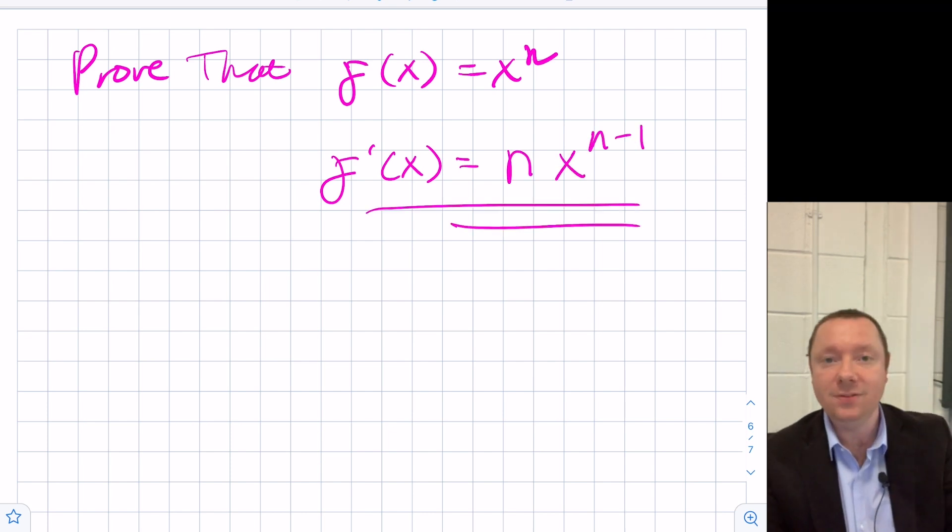This has been Coyle of Maths and today we have been looking at why when you differentiate x squared, you get an answer of 2x. Similarly with x cubed, you get 3x squared, looking at differentiation from first principles. Take care, stay safe and goodbye.